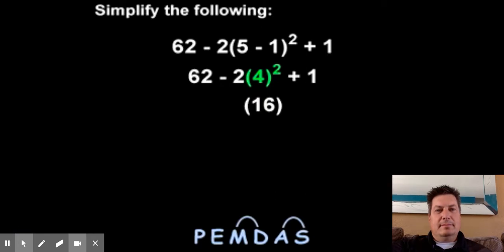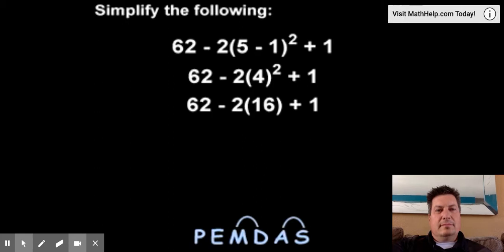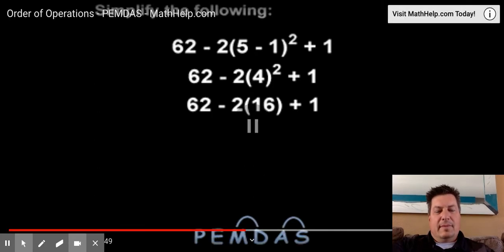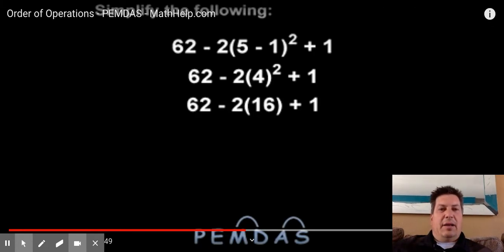Rewriting the problem again, we have 62 minus 2 times 16 plus 1. Here's where the M and the D come into play. M stands for multiplication, and D stands for division. Now they're on the same level, which means that you'll take them from left to right to decide which one is going to be used first, either the multiplication or the division.